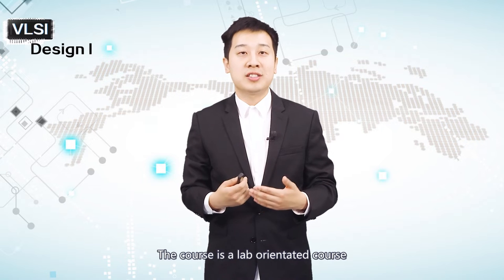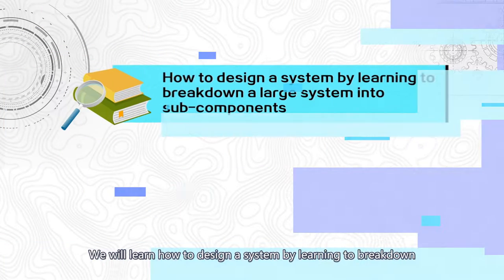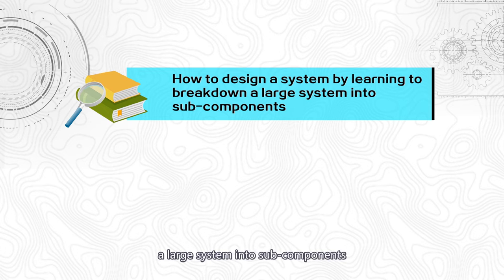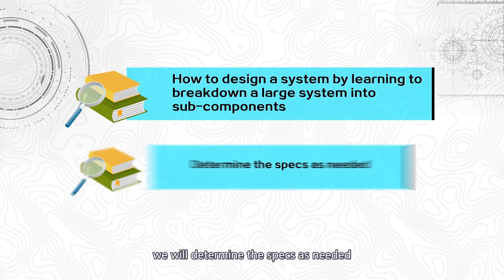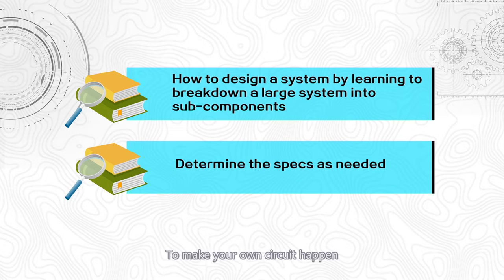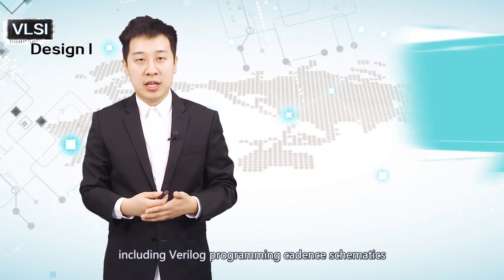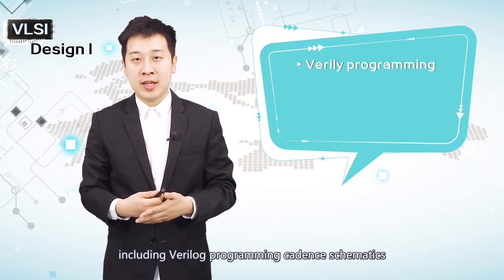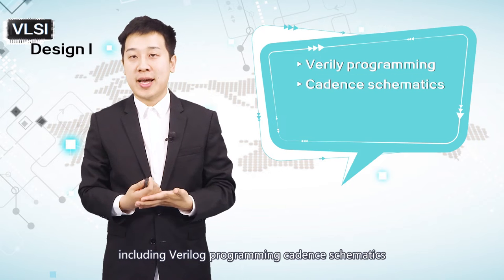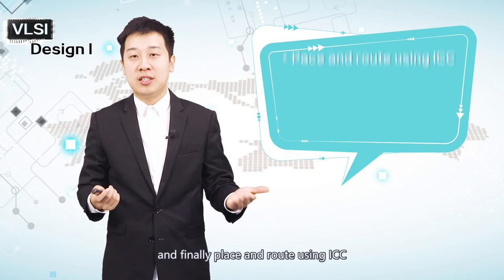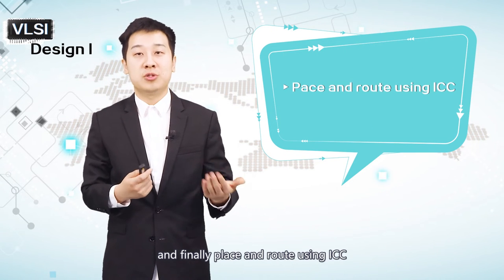The course is a lab-oriented course. We will learn how to design a system by learning how to break down a large system into smaller subsections. We will determine the specs as needed to make your own circuit happen. We will learn multiple circuit component tricks, including Verilog programming, Cadence schematics, DC synthesis using Synopsys, and finally, place and route using ICC.